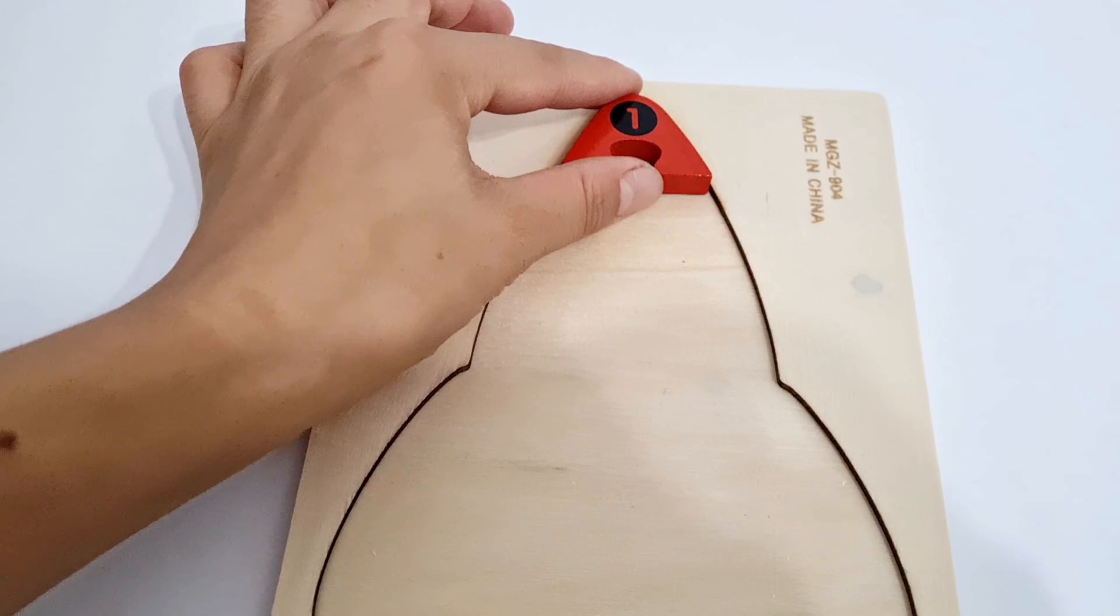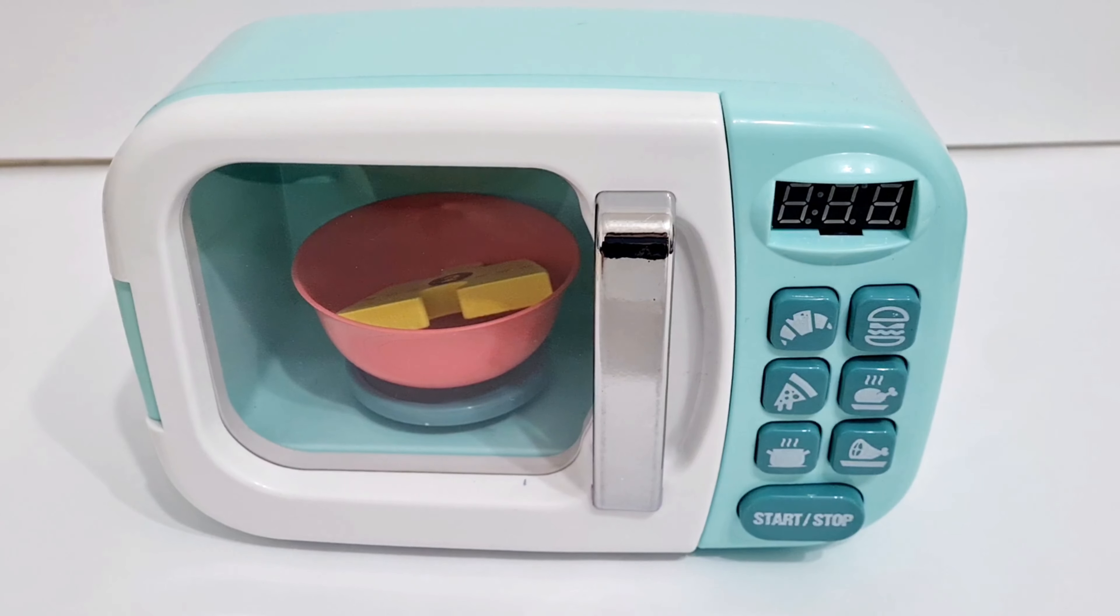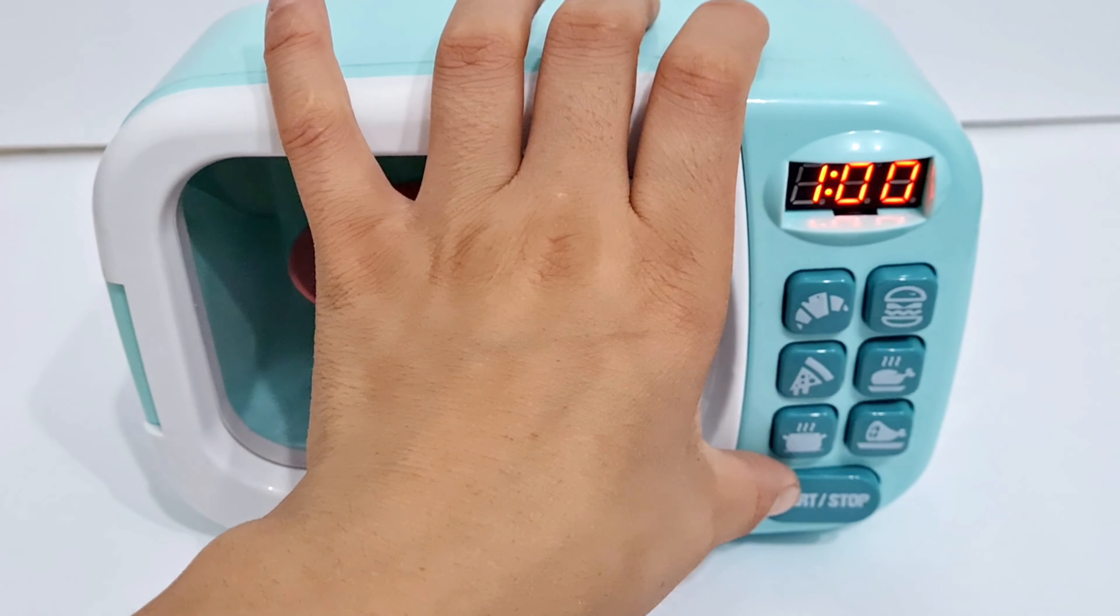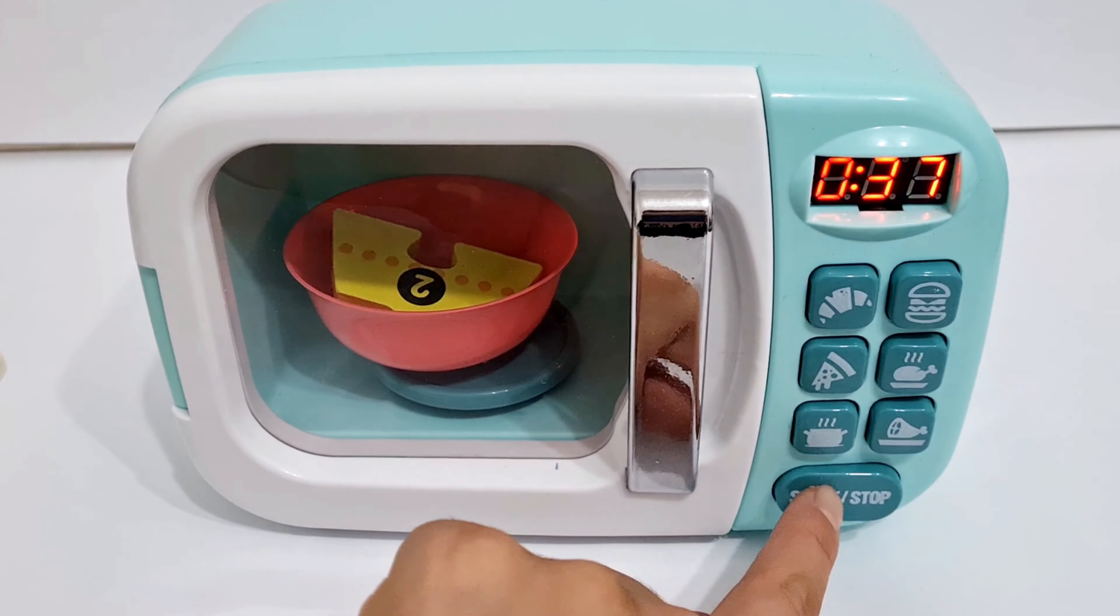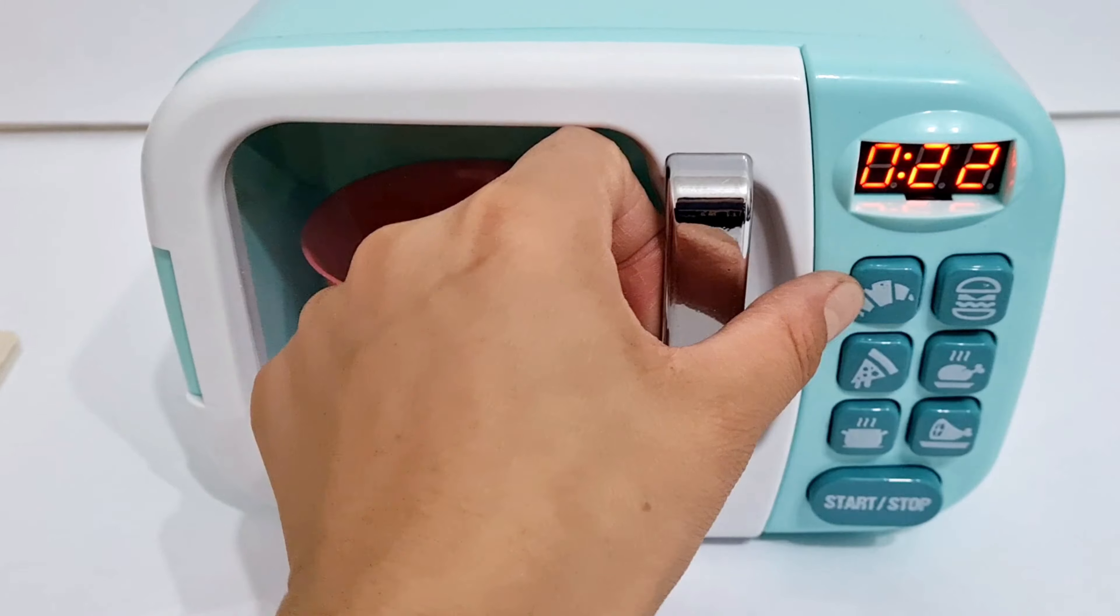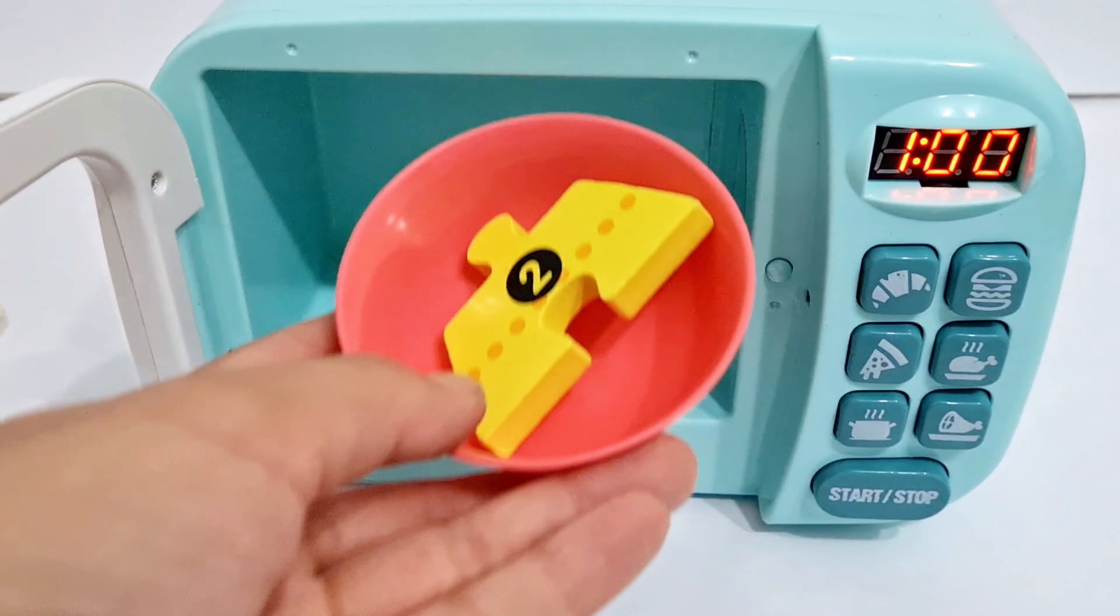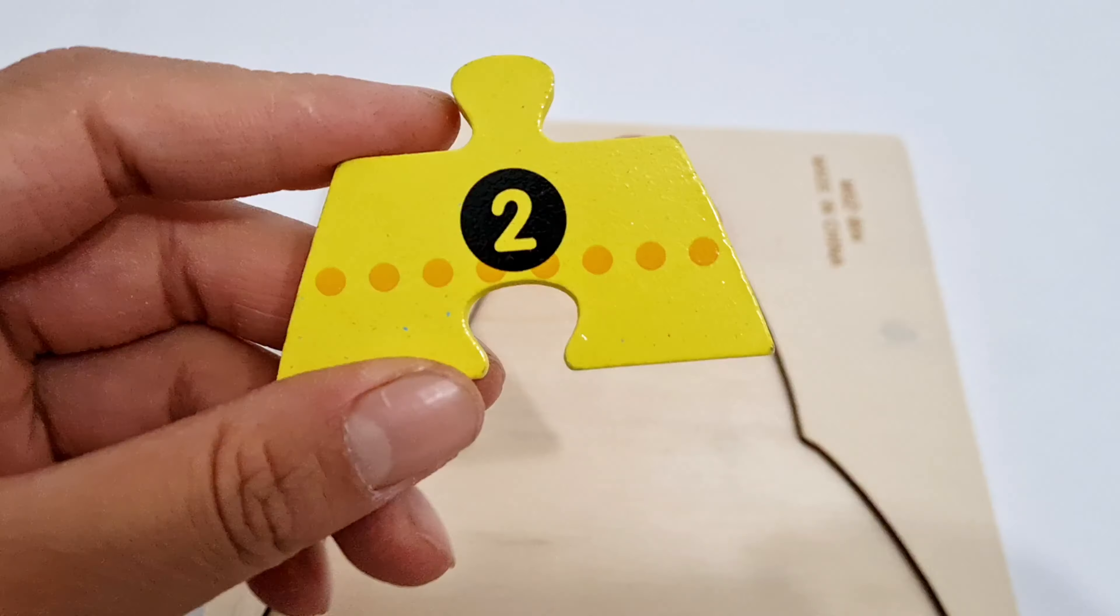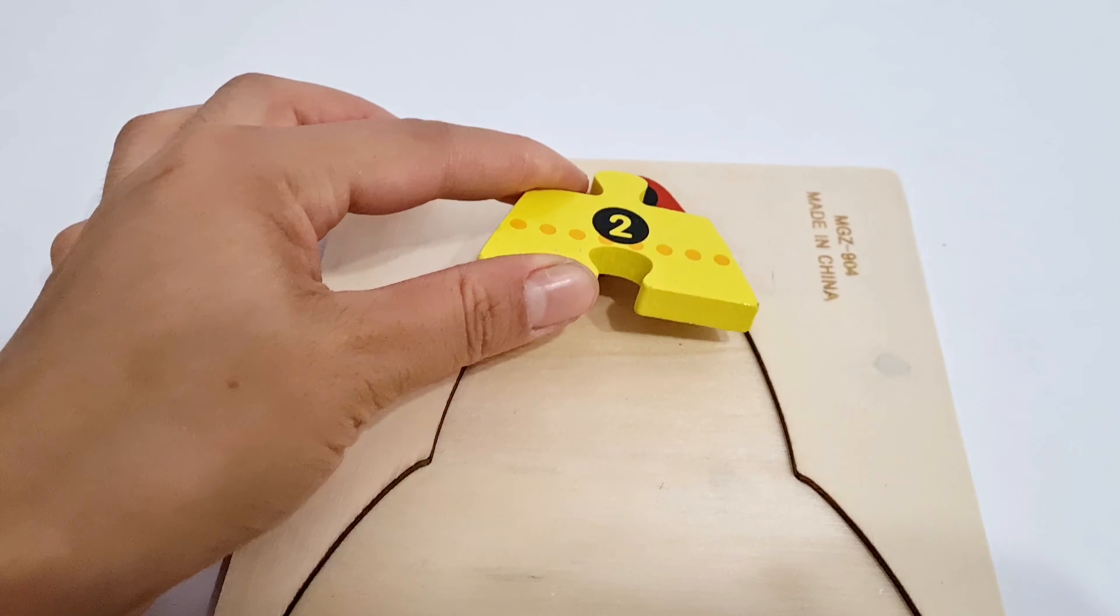Next, we need number two. Let's find it. Wow, it's a microwave. Let's turn it. You see guys, something inside. Maybe our next piece of puzzle is here? Let's open and take it. You are right, guys. It is number two. Number two. We put it after one.